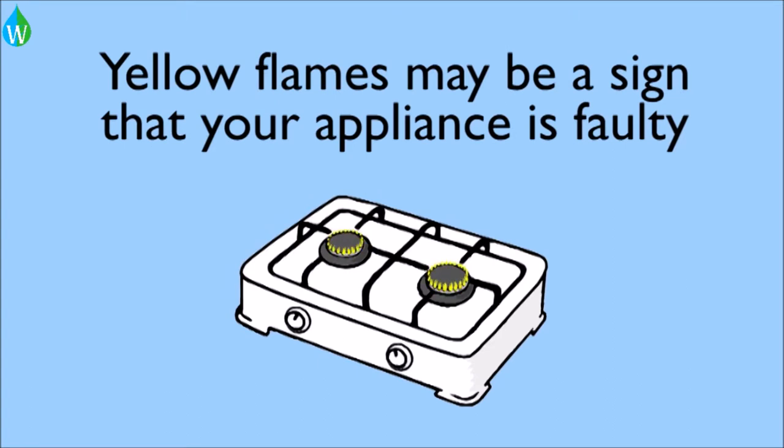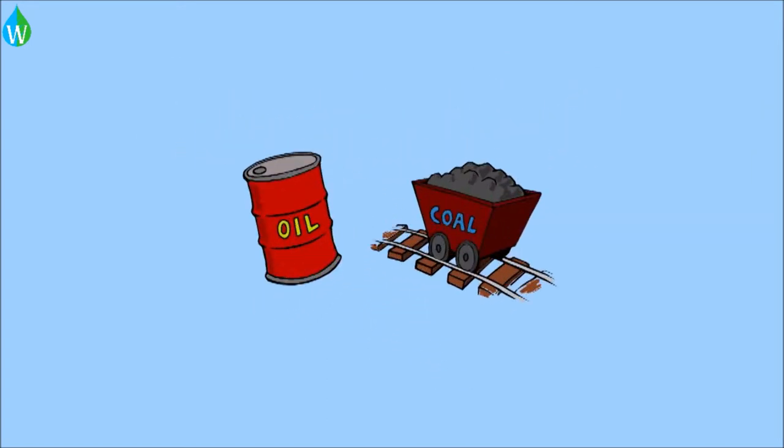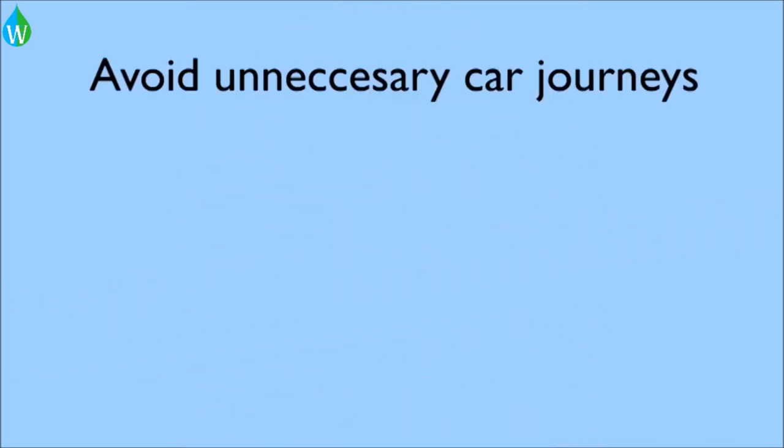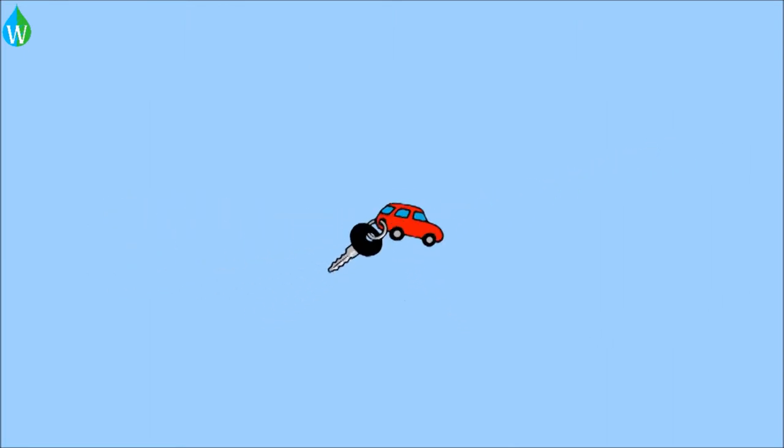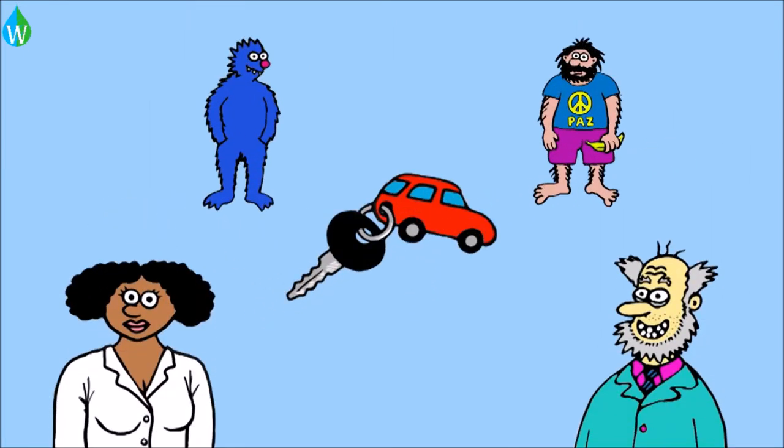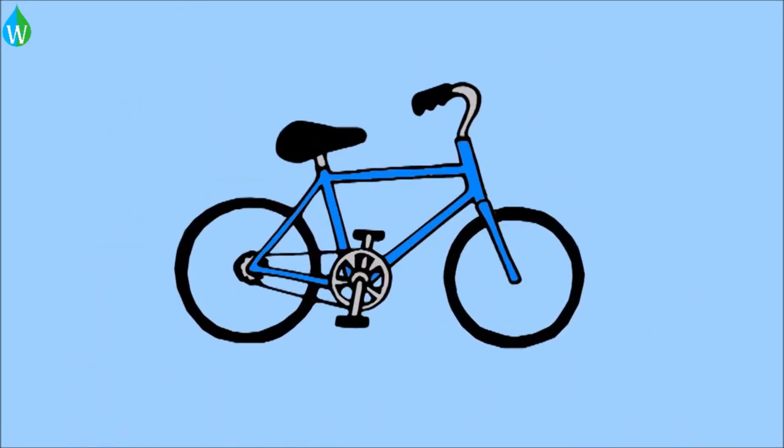Outside, particulate matter can be reduced by ensuring that we burn fewer fossil fuels. We can do this by not doing unnecessary car journeys, by making better use of public transport systems, by carpooling - which is to share our cars with others - or by cycling.